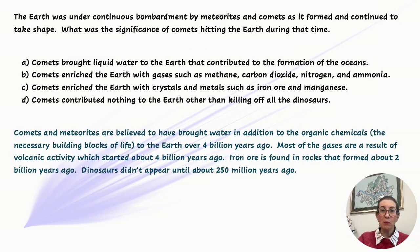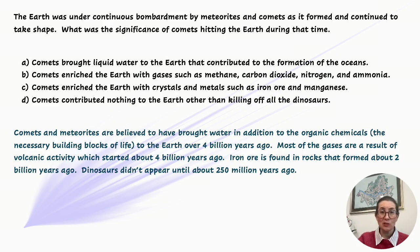The Earth was under continuous bombardment by meteorites and comets as it formed and continued to take shape. What was the significance of comets hitting the Earth during that time? A: Comets brought liquid water to the Earth that contributed to the formation of the oceans. B: Comets enriched the Earth with gases such as methane, carbon dioxide, nitrogen, and ammonia. C: Comets enriched the Earth with crystals and metals such as iron ore and manganese. Or D: Comets contributed nothing to the Earth other than killing off all the dinosaurs.